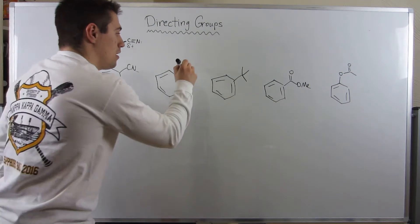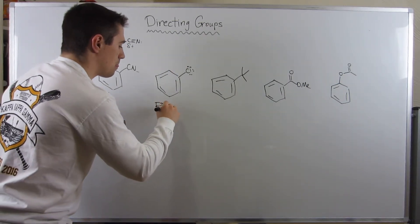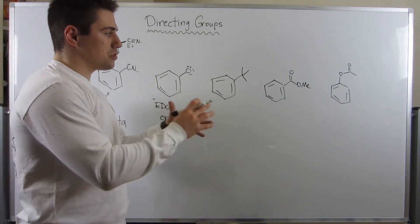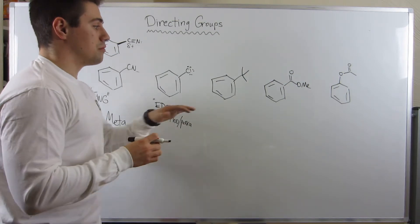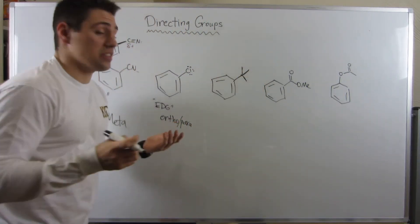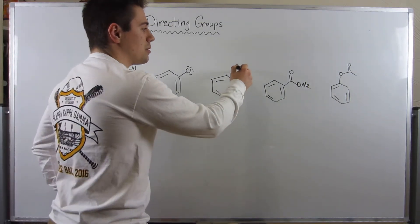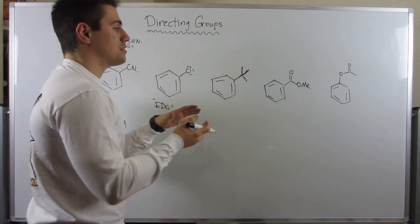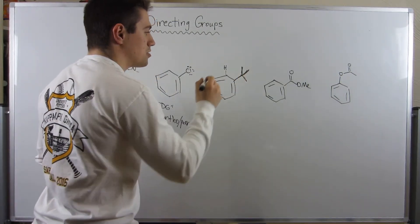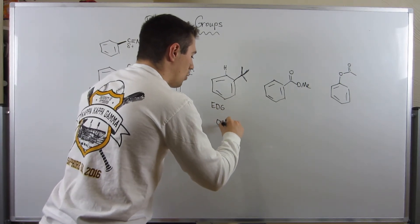Next: chlorobenzene. Directly off the ring we have chlorine, which has lone pair electrons it can easily pump into the system. So chlorine is an EDG — an ortho-para director. Now, an alkyl group: directly off the benzene ring we have a carbon with no delta plus and no electrons to throw into the ring. However, through hyperconjugation — due to free rotation and the fleeting pi-bond-mimicking alignment of the C–H orbitals — alkyl groups lend electron density to the ring. They are EDGs and therefore ortho-para directors.